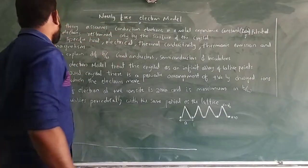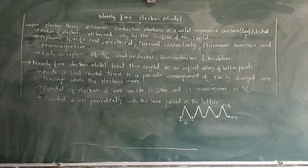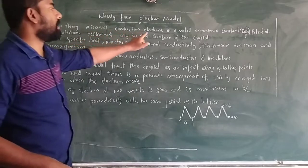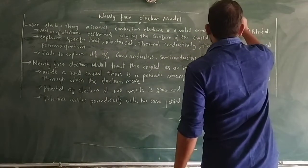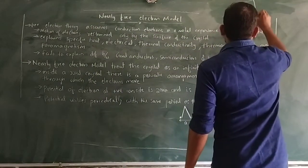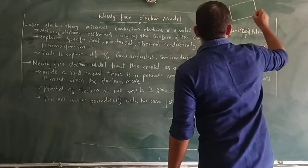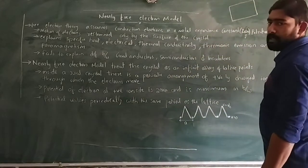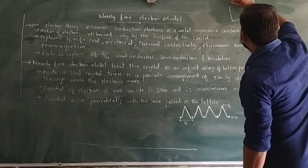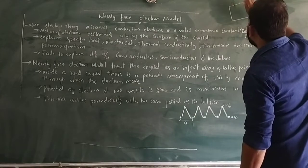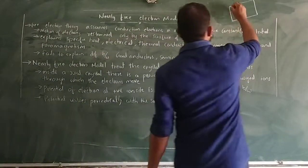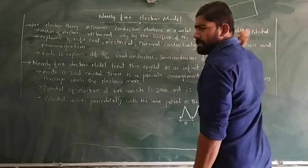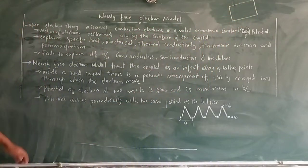Let us discuss the nearly free electron model. Before that, we need to say something about free electron theory. The free electron theory assumes conduction electrons in a metal experience a constant potential, that is, zero potential. In free electron theory, we consider the electrons as an electron gas, which can move throughout the volume of the metal, but cannot go outside the surface. The electrons can move freely anywhere inside the crystal.